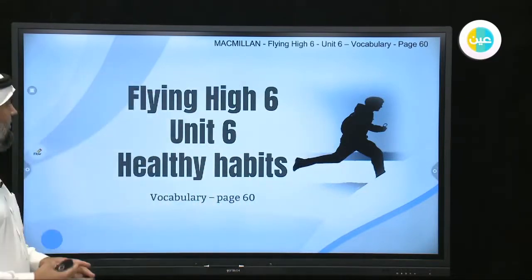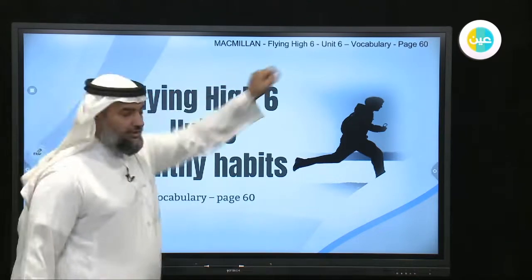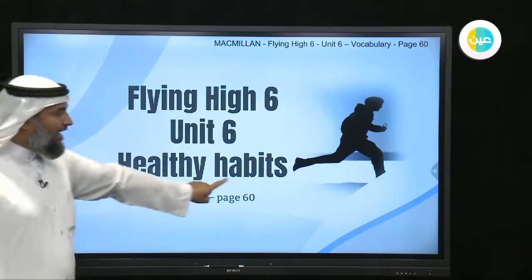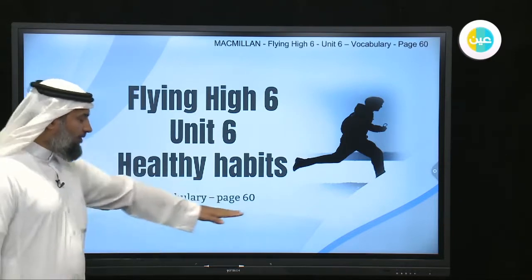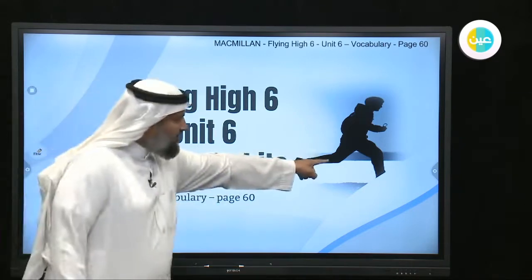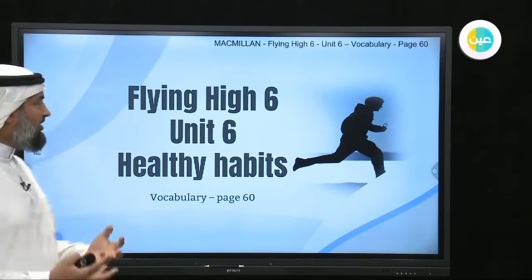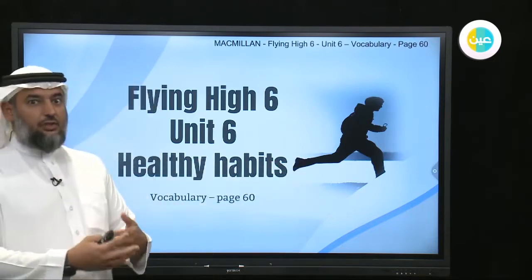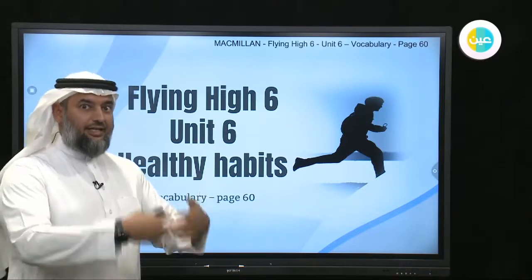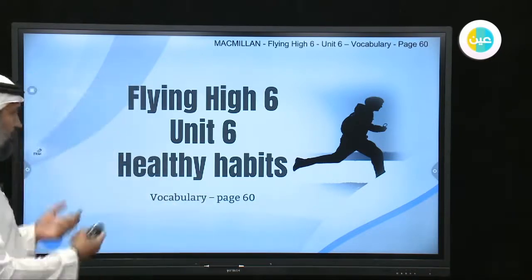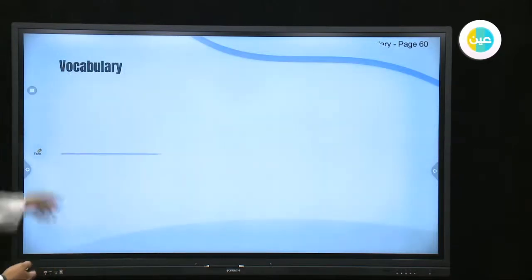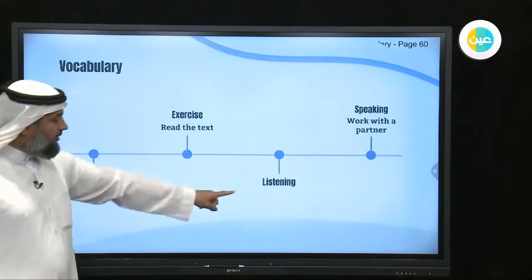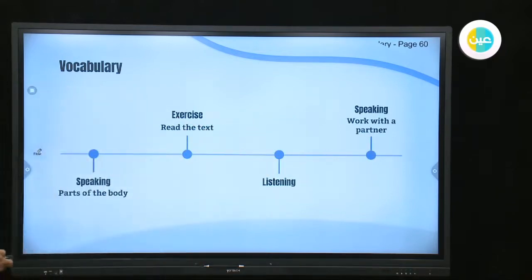Welcome again to our next lesson. We are now on Unit 6 — we finished Unit 5. We're going to Unit 6: Flying High, Unit 6, Healthy Habits. Vocabulary, page 60. What do we mean by healthy habit? Look at this picture — what is he doing? Healthy means good for you; habits means 'adat'. This guy is running, doing something in a habitual way. We will cover vocabulary, then an exercise, listening, and speaking.